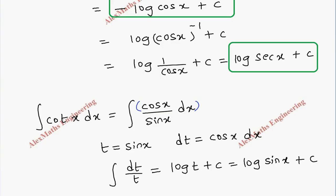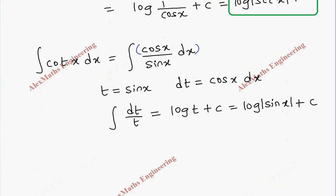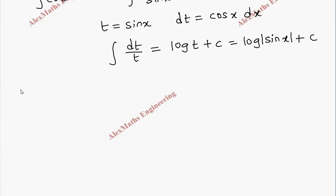Therefore the formula for integration of cot x is log|sin x| plus c. Usually inside the log there cannot be a negative, so we take the modulus sign whenever log appears. So for tan x it is minus log|cos x| plus c, or log|sec x| plus c, and for cot x it is log|sin x| plus c.